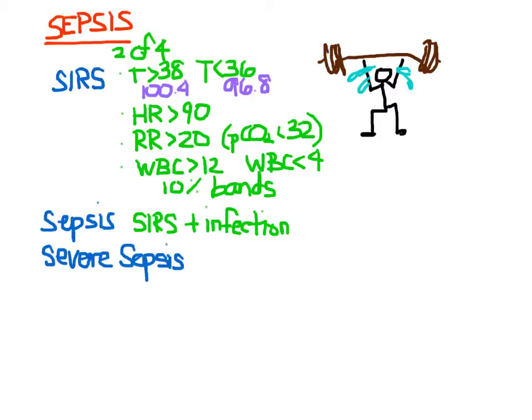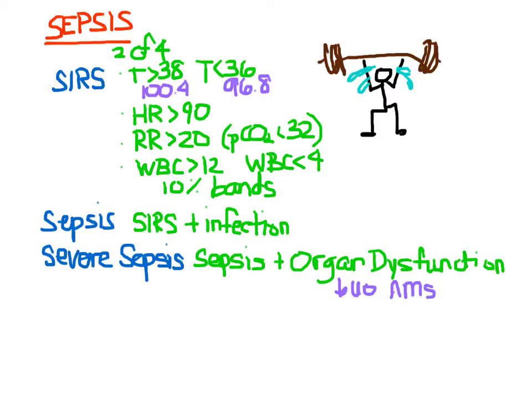Next is severe sepsis. This is sepsis with some sort of organ dysfunction due to hyperperfusion. So this organ dysfunction might mean that you have decreased urine output, altered mental status, or you might be hypotensive. Or another marker of hyperperfusion is an elevated lactate, which would be greater than 4 millimoles per liter.